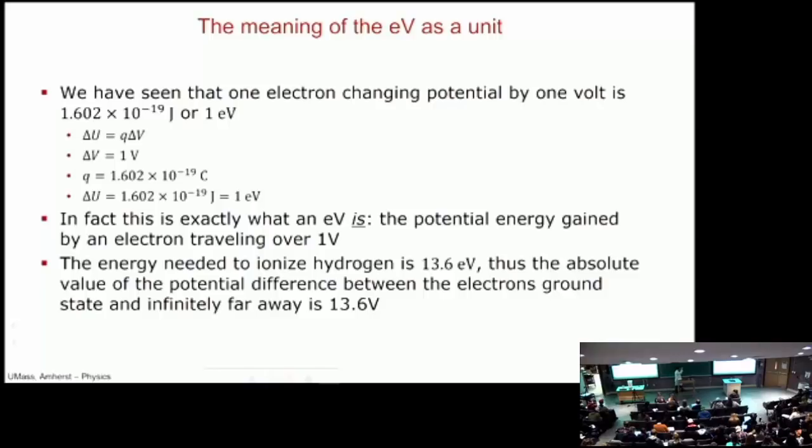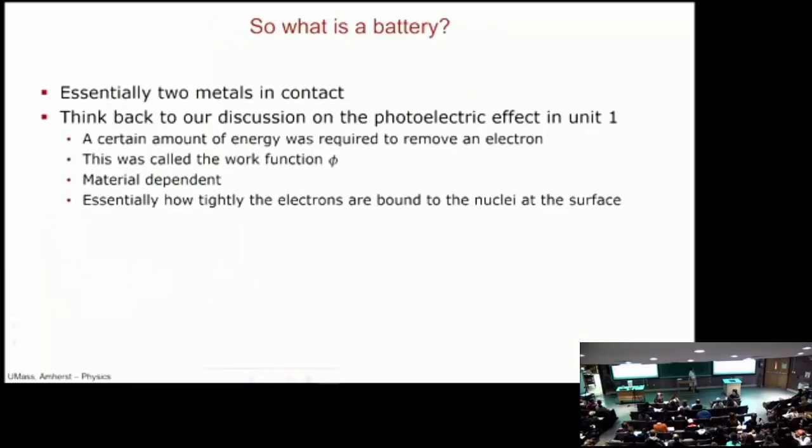In fact this is what an electron volt is. It's even right there in the name of the unit. An electron volt is a unit of energy that is one electron through one volt. It's a potential energy gained by a single electron going over a volt. I think I've mentioned before that the energy you need to ionize hydrogen gas is 13.6 electron volts. Based upon this you can say that the potential difference between the ground state of the electron and very far away is 13.6 volts. Keeping this distinction between electron volts as energy and volts as potential is going to be really important for the rest of today.